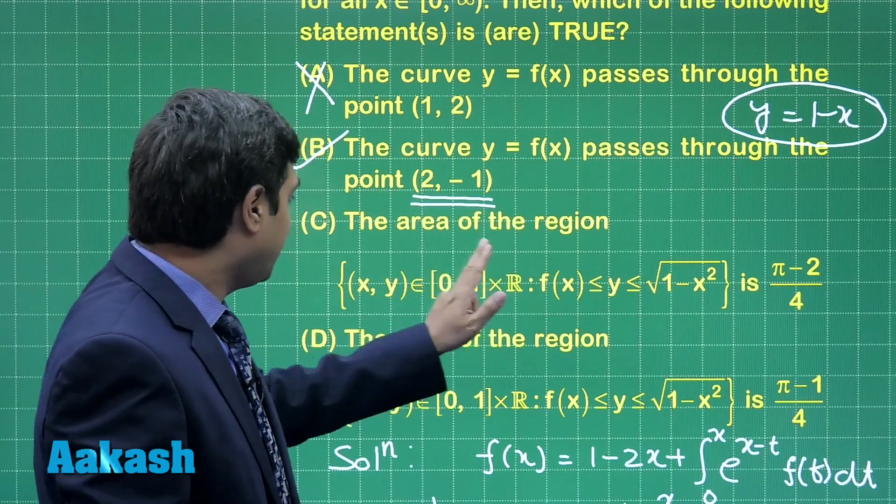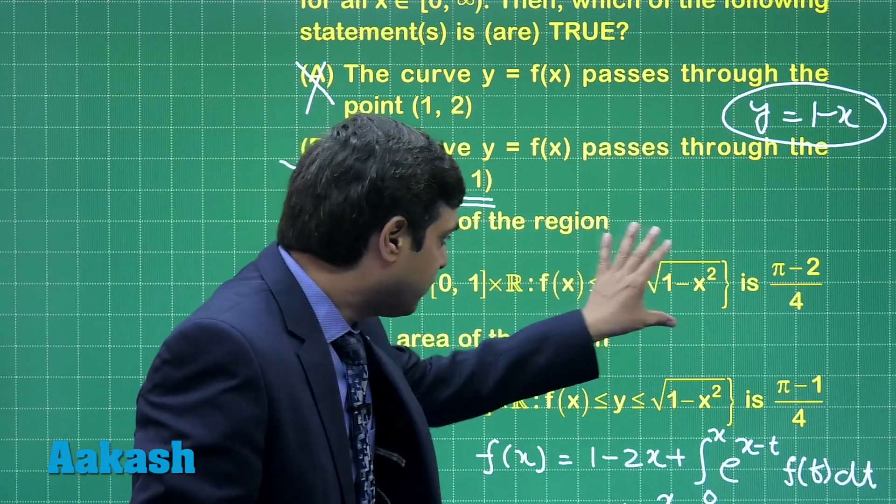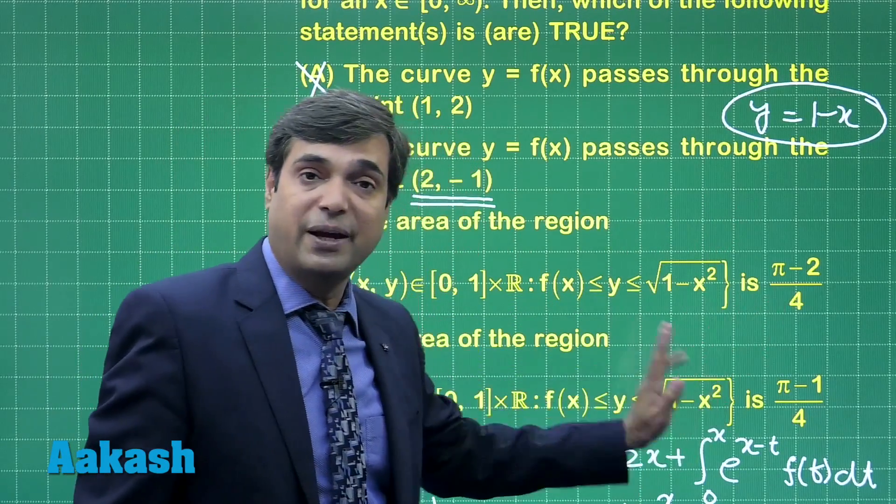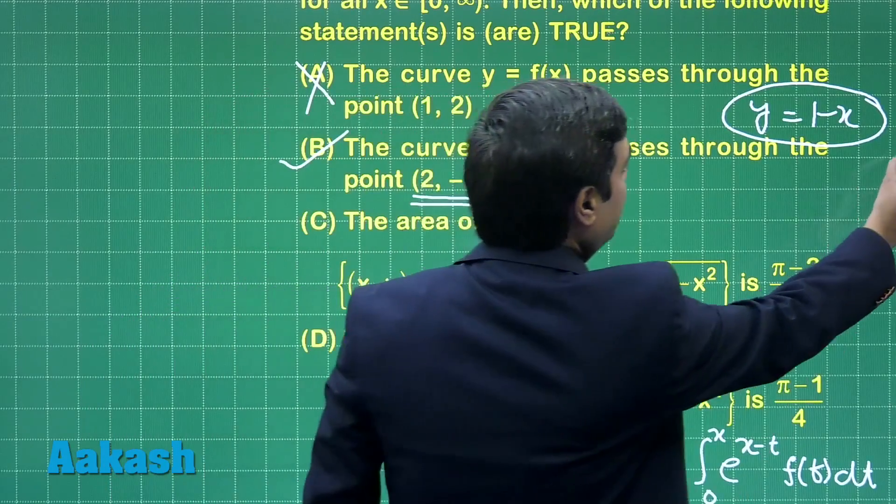Next, the area of the region bounded by this one is either (π - 2)/4 or (π - 1)/4. Let us go for the area.